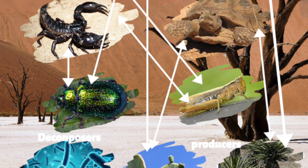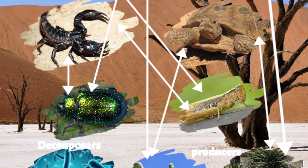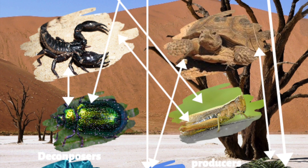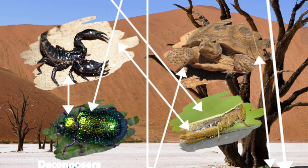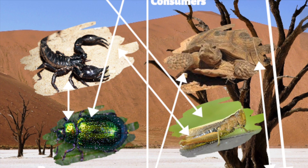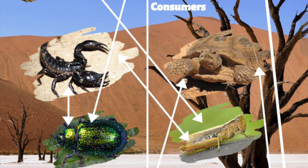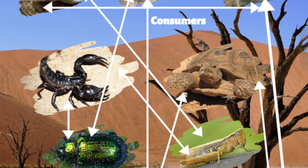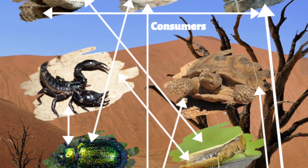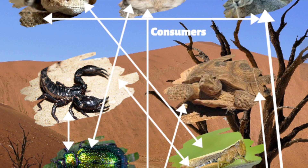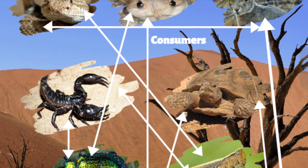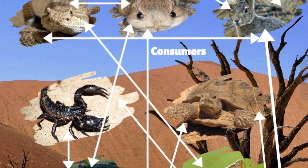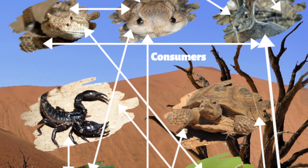The prickly pear will be eaten by the jackrabbit, desert tortoise, and kangaroo rat. The yucca will be eaten by the jackrabbit and desert tortoise. The grasshopper will be consumed by the rattlesnake and kangaroo rat. The beetle will also be consumed by the kangaroo rat, and the scorpion will consume the grasshopper. The kangaroo rat is then eaten by the rattlesnake, as is the jackrabbit.